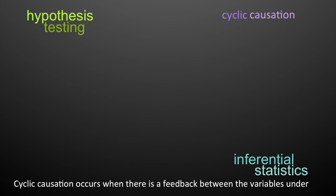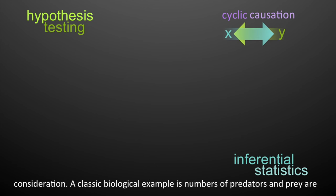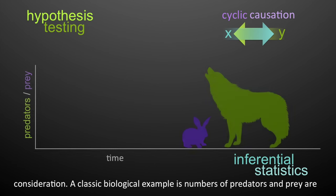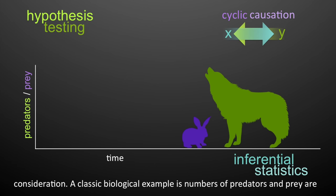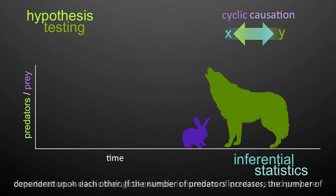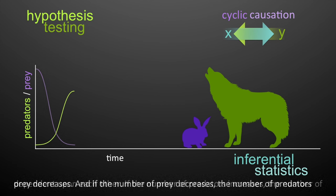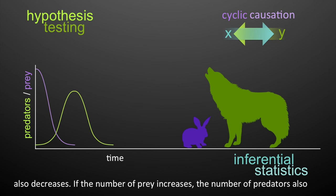Cyclic causation occurs when there's a feedback between variables under consideration. A classic biological example is the numbers of predators and prey being dependent upon each other. If the number of predators increases, the number of prey decreases. And if the number of prey decreases, the number of predators also decreases.